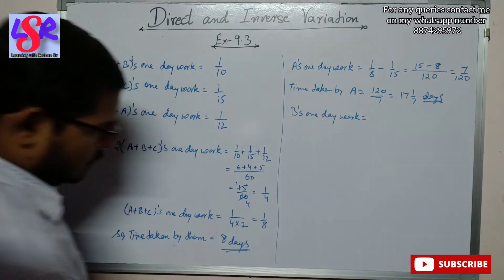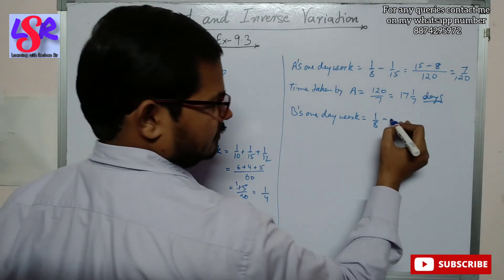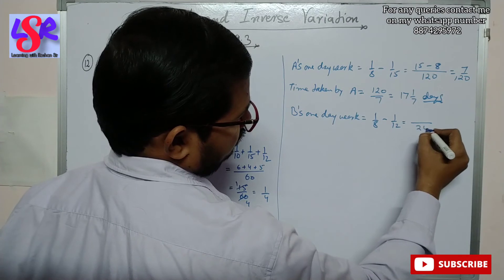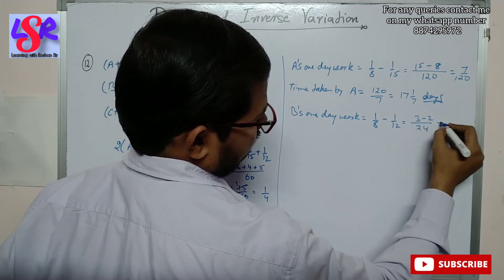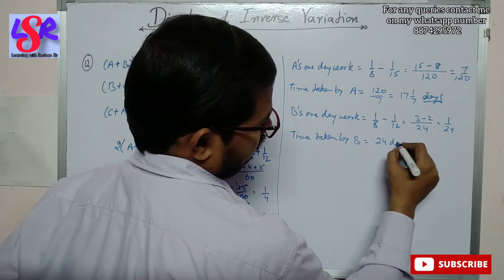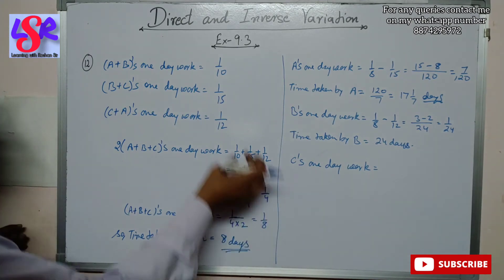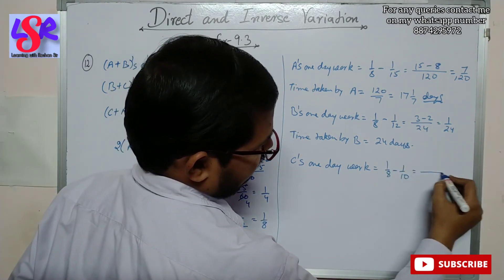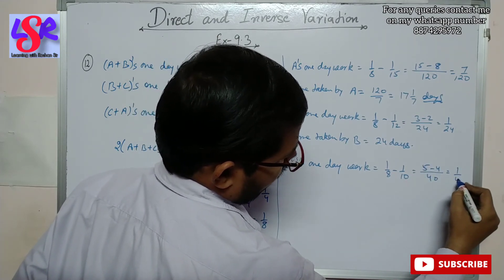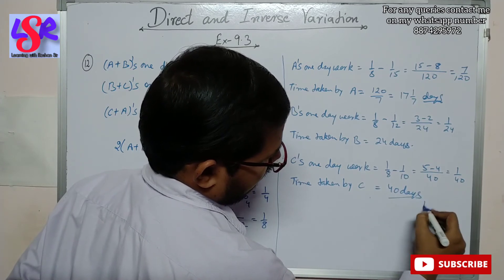B's one day work is 1 upon 8 minus C plus A's one day work, so this is 1 upon 8 minus 1 upon 12. LCM of 8 and 12 is 24, giving 3 minus 2 = 1 upon 24. So time taken by B equals 24 days. C's one day work equals 1 upon 8 minus 1 upon 10, with LCM of 40 giving 5 minus 4 = 1 upon 40. So time taken by C to complete the work equals 40 days as the answer.